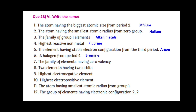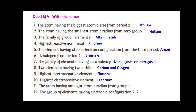The family of elements having zero valency are noble gases or inert gases. Two elements having two orbits are carbon and oxygen. The highest electronegative element is fluorine. The highest electropositive element is caesium. The atom having the smallest atomic radius from group 1 is hydrogen. The group of elements having electronic configuration 2, 2 is group 2.